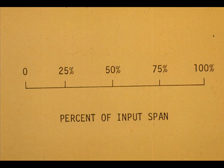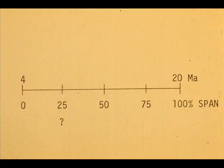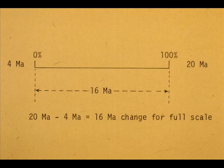For full calibration, we must calculate outputs between the range extremes. A five-point calibration is sufficient. Assume that our transmitter has a 4 to 20 milliamp output range. What is the correct output for 25% span? It is 8 milliamps.